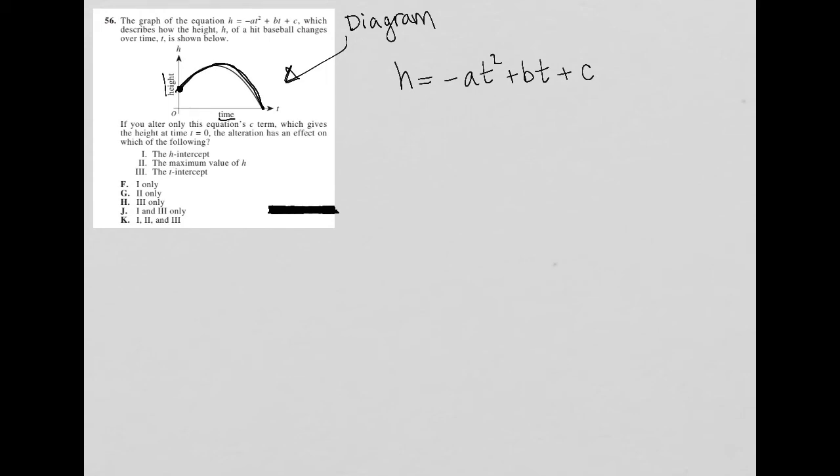So the rest of this question says, if you alter only this equation's c term, which gives the height at time t equals zero, so c equals height.